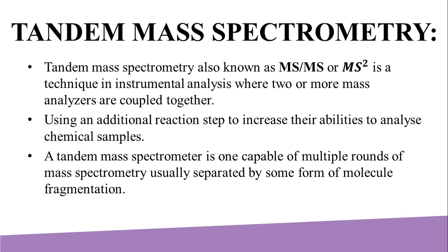There are various methods of fragmenting molecules in tandem mass spectrometry, including collision-induced dissociation (CID), electron capture dissociation (ECD), electron transfer dissociation (ETD), infrared multi-photon dissociation (IRMPD), blackbody infrared radiative dissociation (BIRD), electron detachment dissociation (EDD), and surface-induced dissociation (SID).